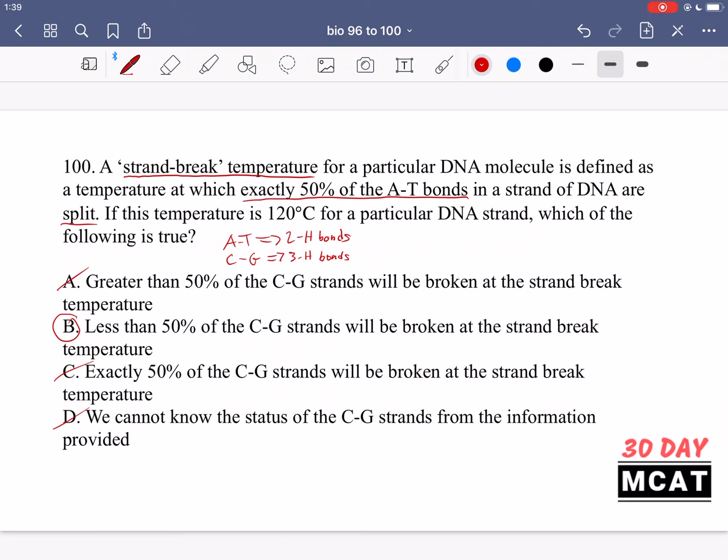So based on that information we can still kind of extrapolate that less than 50% of those strands are broken. So it's not an exact answer that we're giving. Therefore we can still say something about the status of the CG strands, but it's not an exact answer and you should be able to still extract it based on the information that you have and things that you know about these bonds. So therefore D is incorrect.